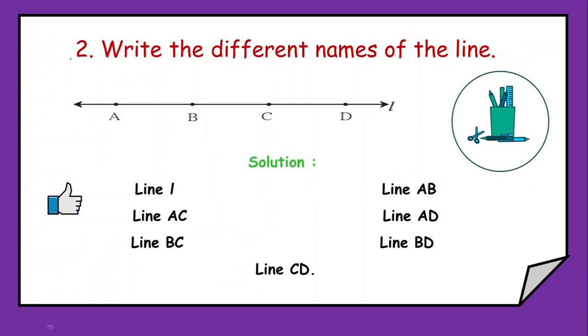Now the second question we have is write the different names of the given line. Now reading the figure we have to create the names. Simply by using the small letter at the end line L, then you can say line AB, line AC, line AD.